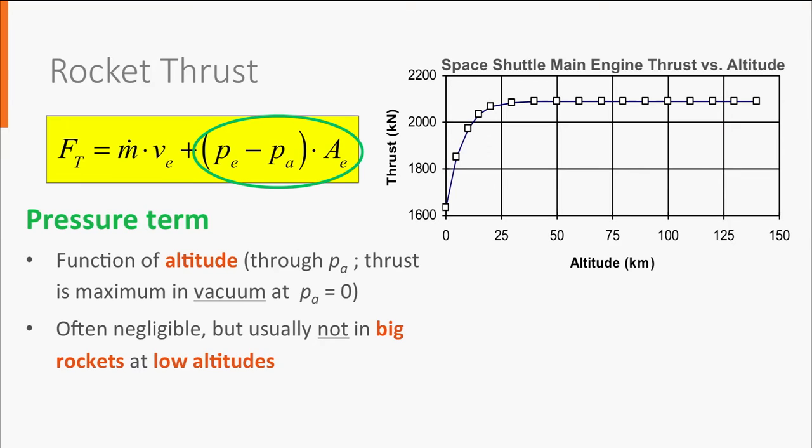Take a look at this example, showing the thrust of a space shuttle main engine as a function of altitude. You can clearly see that the thrust is practically constant at altitudes higher than 25 km, but decreases significantly at lower altitudes.